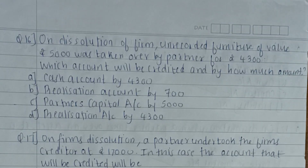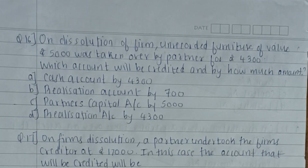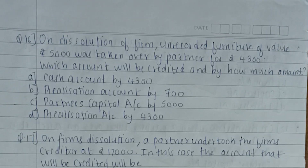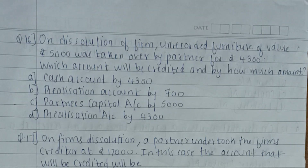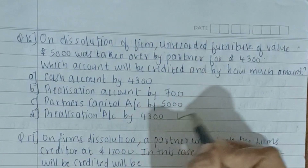Sixteenth question: on dissolution of a firm, unrecorded furniture valued at Rs. 5,000 was taken over by a partner at Rs. 4,300. Which account will be credited and by how much? When an asset is taken over, it is recorded on the credit side of the realization account. The amount to record is what the partner paid — Rs. 4,300 — not the book value. The answer is realization account, credited by Rs. 4,300.